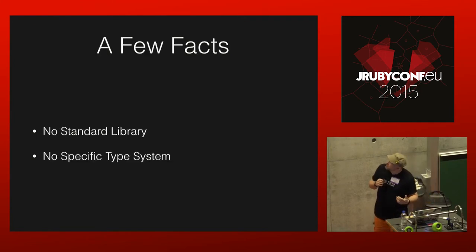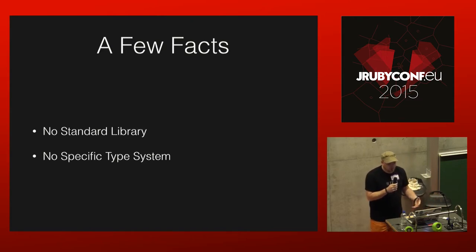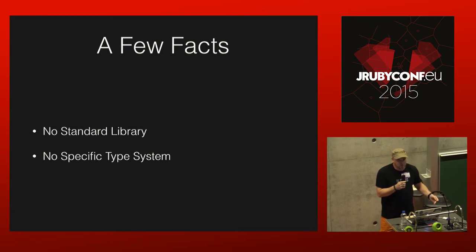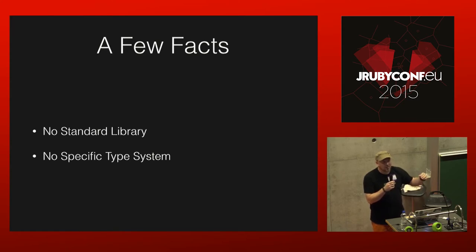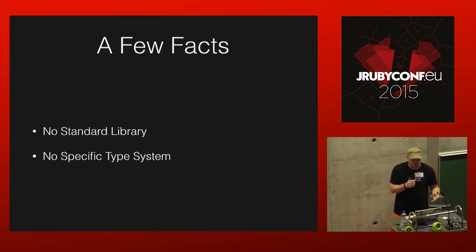A few facts: because Mirah is essentially a compiler, it ships with no standard library. The idea is that users will choose what libraries they want, kind of a la carte — they'll write the plugins they need to support what they need, and the compiler will take care of the rest. That was an explicit design goal. Why build lots of things you might need instead of building a few things that allow you to take just the pieces you need and build them yourself?